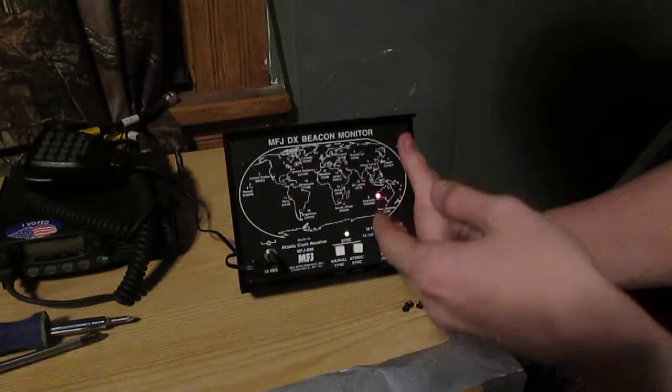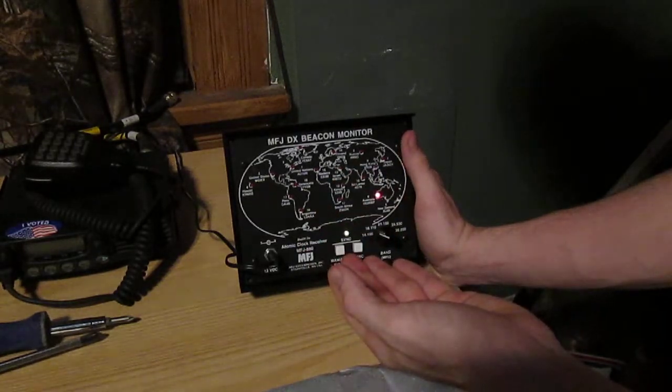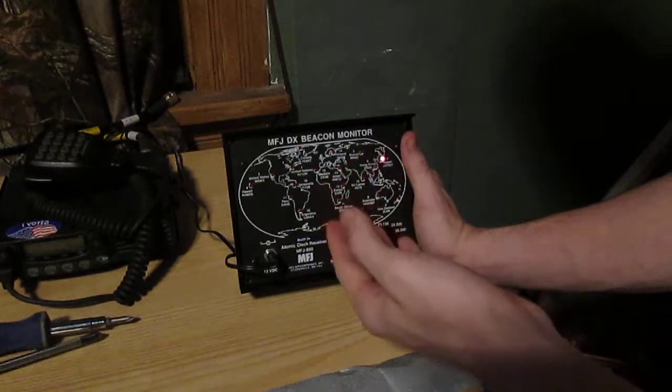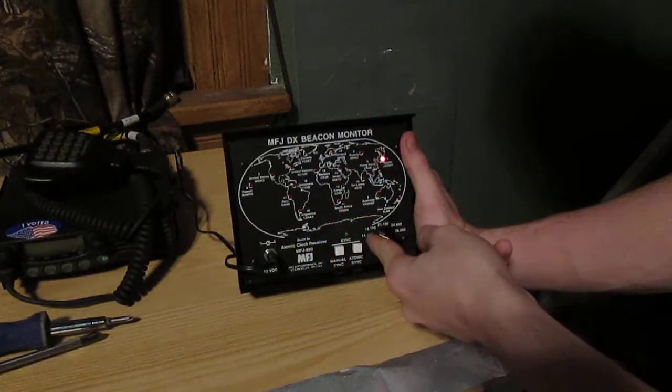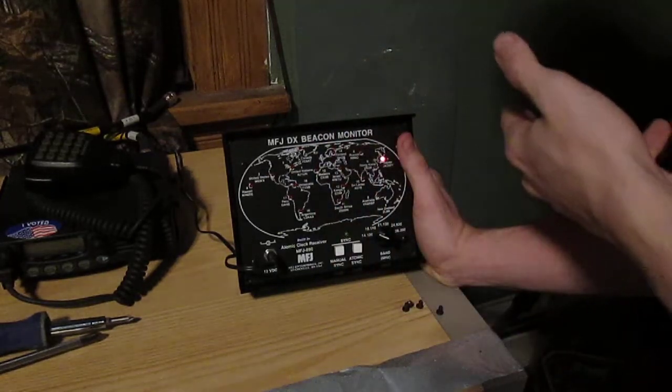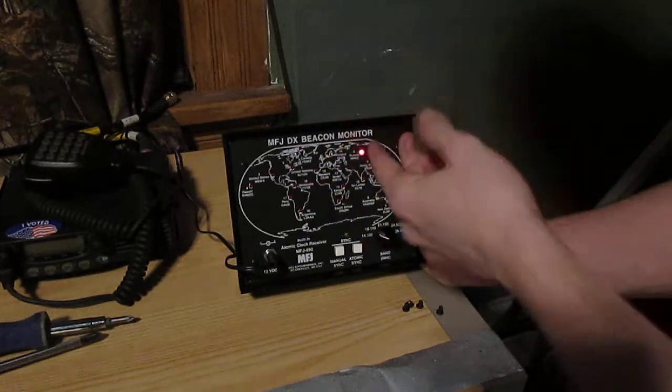So what this thing does, if you're in ham radio, you've got your general, advanced, or extra license and you talk on the HF, there's 18 beacons around the world. And what they do is for like 10 meters through 20, because they're kind of literally bands, these beacons will let you know where they're opening or not.